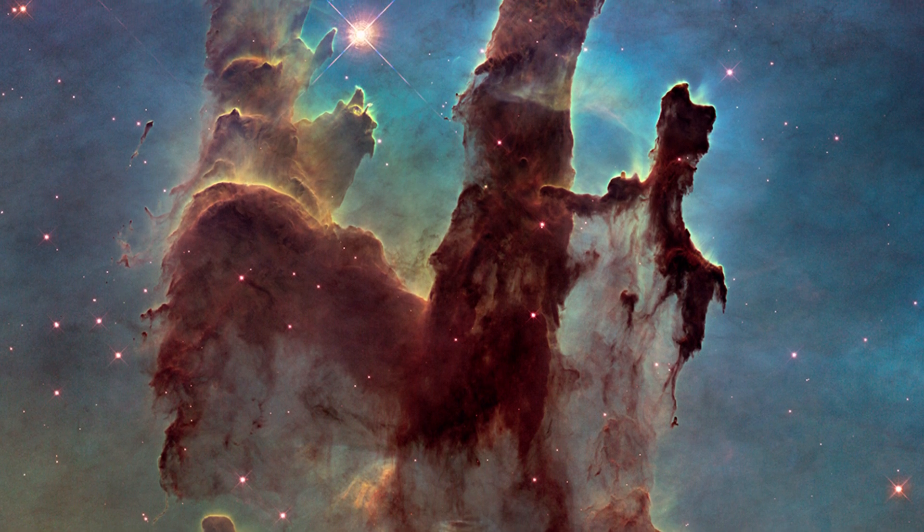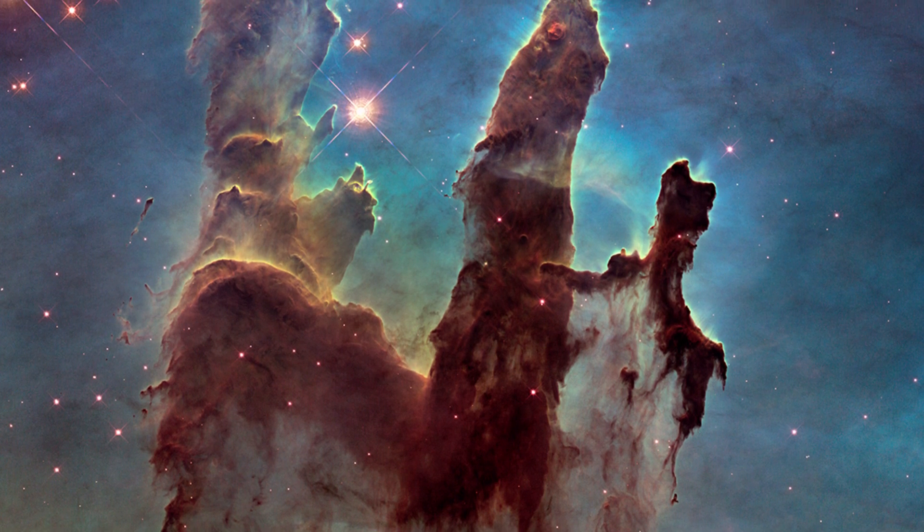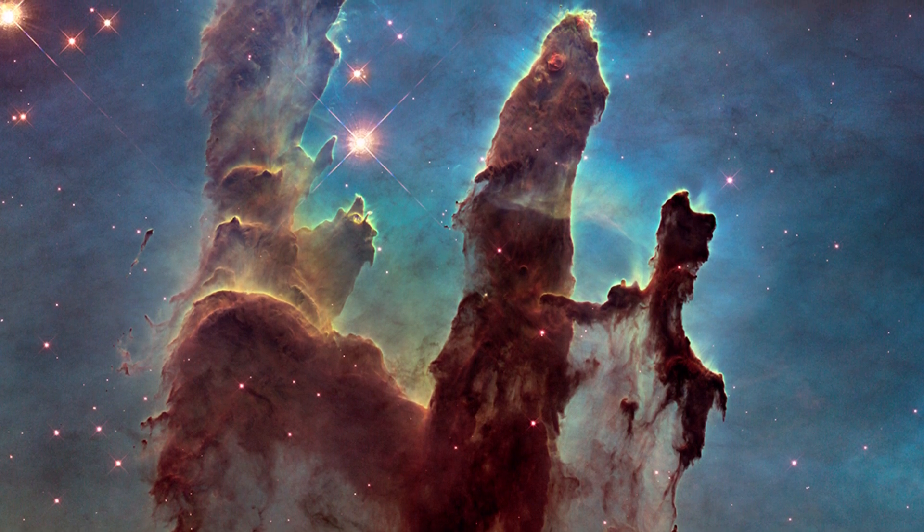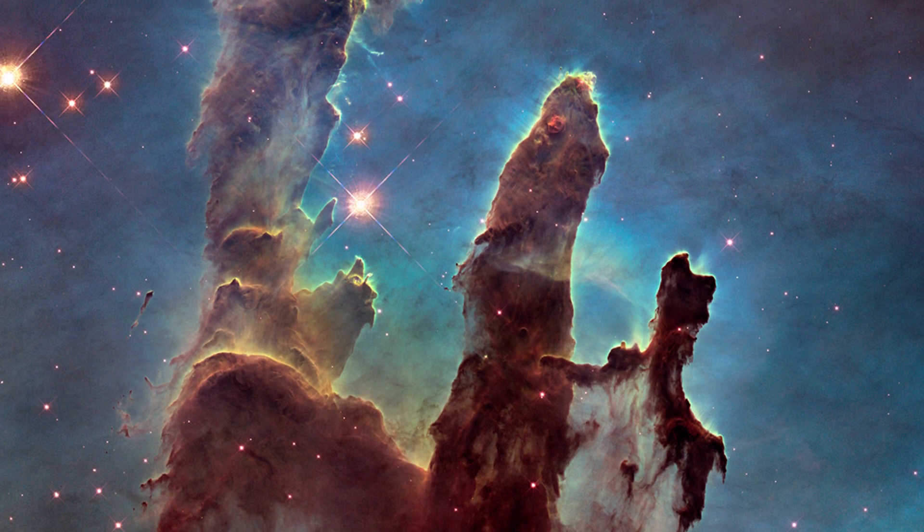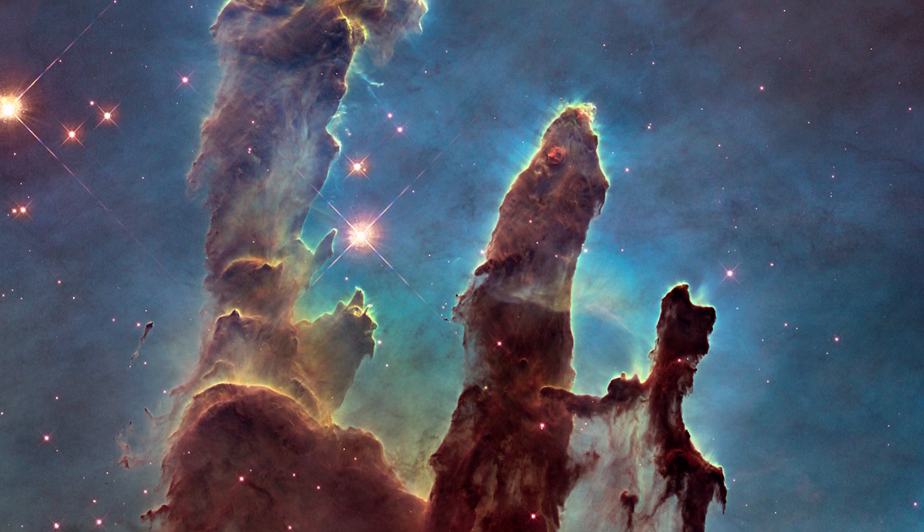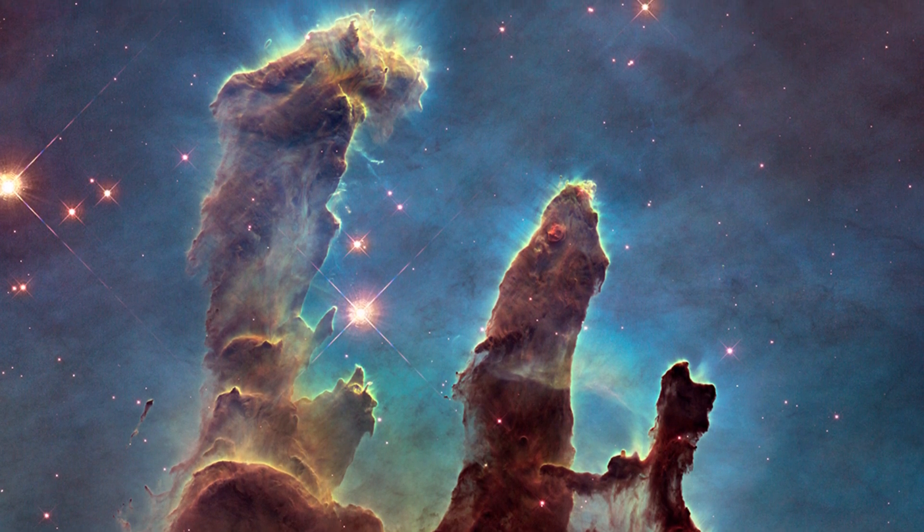When our universe was born from the Big Bang, in the following moments of existence, it didn't have any stars around to emit light. Instead, it was a completely opaque plasma. A strange, bubbling, boiling hot soup of protons, electrons and neutrons, whirling around and trying to find their place in the universe. Literally speaking, of course.